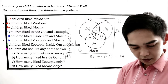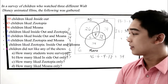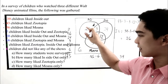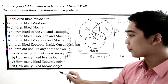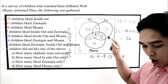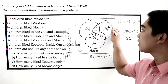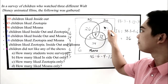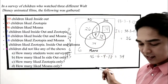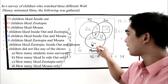How many like Inside Out only? There are 26. How many like Zootopia only? There are 24. And how many like Moana only? There are 34.